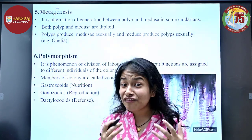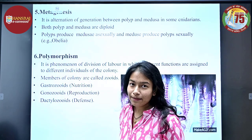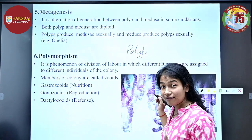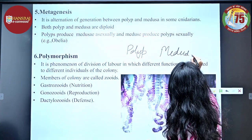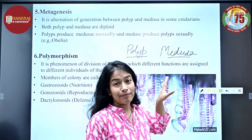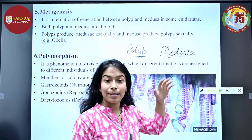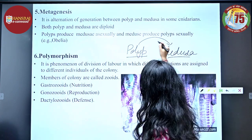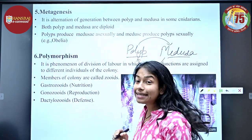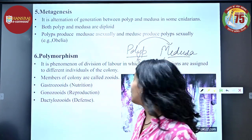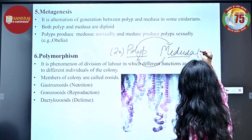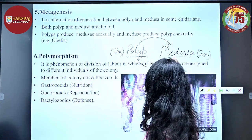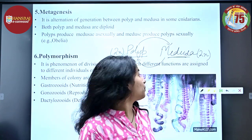Metagenesis is a very important characteristic of Phylum Cnidaria. There are two individual forms: the polyp, which is attached to the substratum, and the medusa, which is the free-swimming form. The alternation of generation — from polyp to medusa and from medusa to polyp — is called metagenesis. Polyps reproduce asexually to produce medusa, and medusa reproduces sexually to produce polyp.